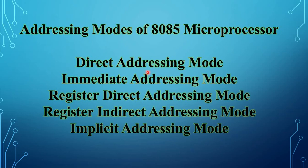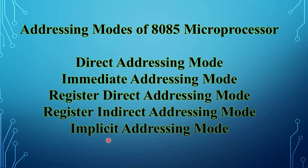The next topic is addressing modes of the 8085 microprocessor. The method of specifying the operand in the operand field of an instruction is called addressing mode. The various addressing modes are: direct addressing mode, immediate addressing mode, register direct addressing mode, register indirect addressing mode, and implicit addressing mode.